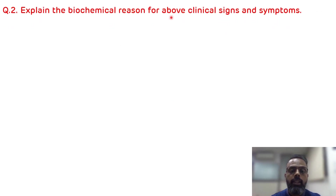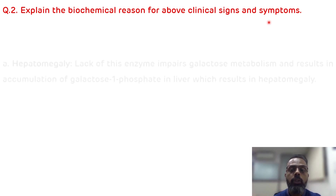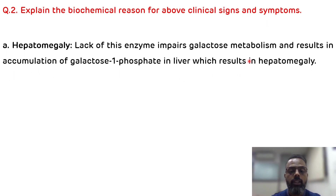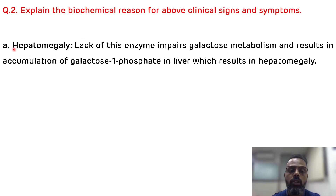Question two: explain the biochemical reason for the clinical signs and symptoms. The first sign is hepatomegaly — enlargement of the liver. This occurs due to the accumulation of galactose-1-phosphate in the liver, because of the absence of galactose-1-phosphate uridyltransferase. There is no conversion of galactose-1-phosphate to glucose-1-phosphate, resulting in accumulation in the liver and ultimately hepatomegaly.